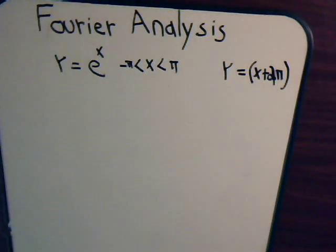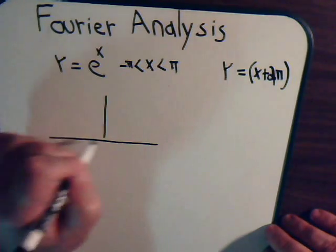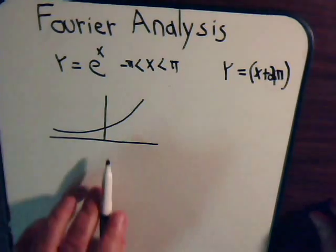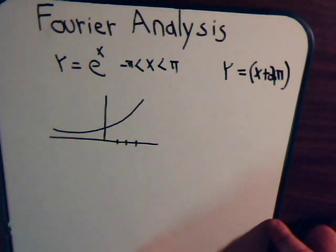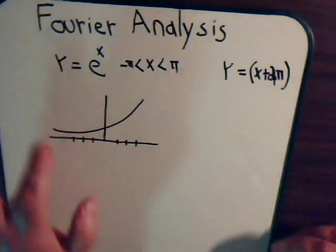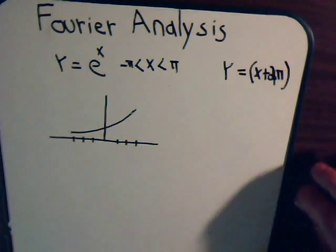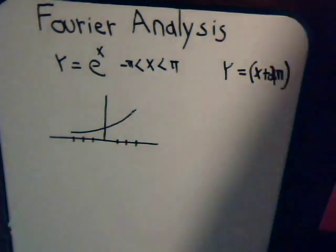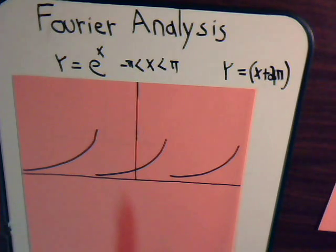Let's think about what the graph would look like. For e to the x, at x equals zero that equals one, and we can imagine going over one, two, three units on one side and two on the other. So from minus pi to pi it would look something like this, and since the function is periodic, roughly it would repeat like this. We want to know how we can expand this in a Fourier series.